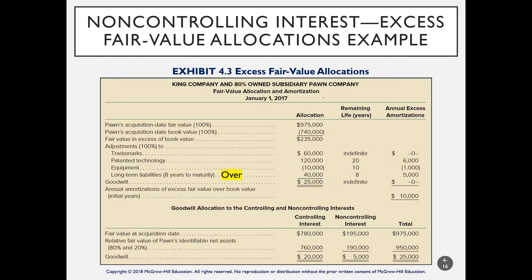We continue with our calculation using the total fair market value, comparing it to the total book value of Pond Company on January 1st, 2017. We have a difference allocated to trademark and patent technology that were undervalued, equipment that is overvalued, and liabilities that were overvalued. Aside from trademark and goodwill, the rest have a useful life, so we calculate amortization, arriving at a net annual amortization of $10,000. Goodwill was $25,000.